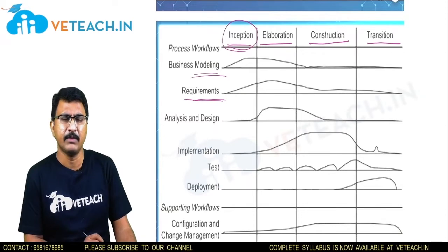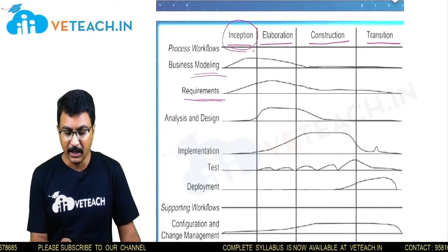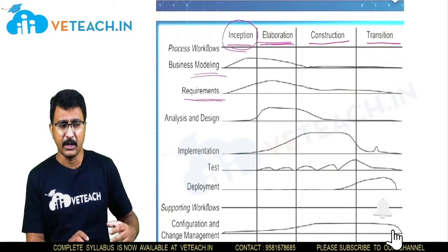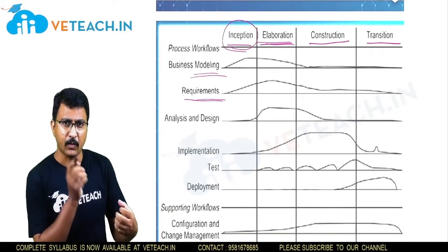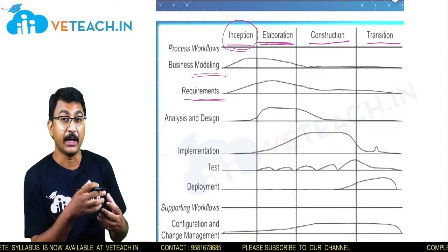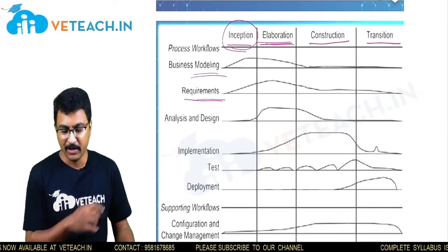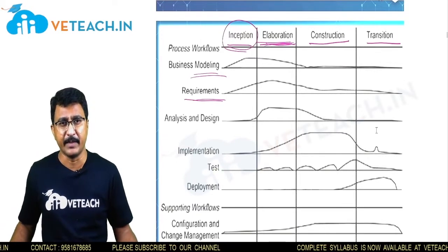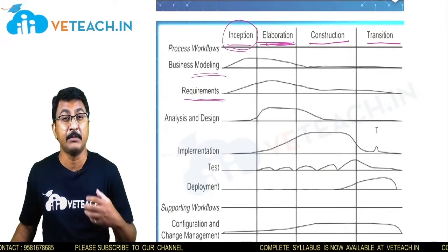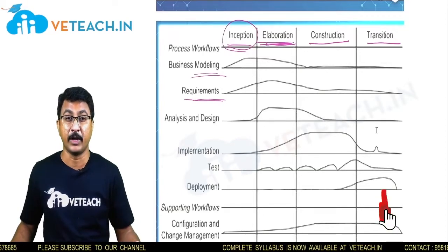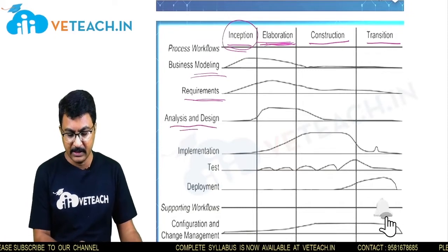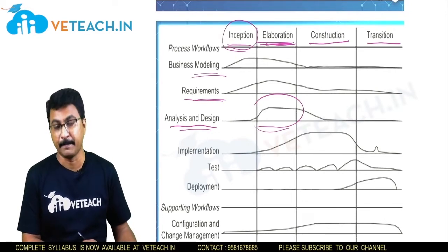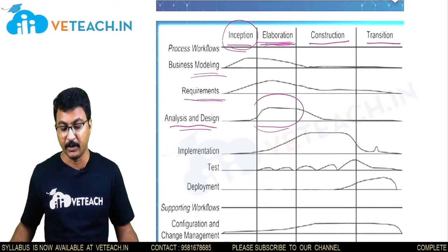Inception phase leads you into the elaboration phase, which is the second phase. In the elaboration phase, as you start collecting all the requirements, you start focusing on each requirement and try to understand how it can be solved using a method, a model, a design over those requirements. The elaboration phase is where you realize whether a requirement can be rendered and solved in the problem domain or not. Analysis and design have a lot of importance in elaboration.